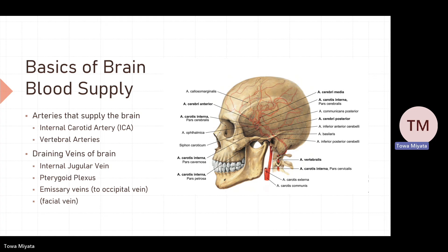Vertebral arteries, on the other hand, start from the subclavian arteries and enter the transverse foramina, usually at the level of cervical vertebra C6. Through the transverse foramina of the cervical vertebrae, they enter the skull via the foramen magnum. Regarding drainage: the main vein that drains the brain is the internal jugular vein, starting from the jugular foramen. Some venous blood drains into the pterygoid plexus, and a small fraction is drained by emissary veins of the skull into the occipital vein.